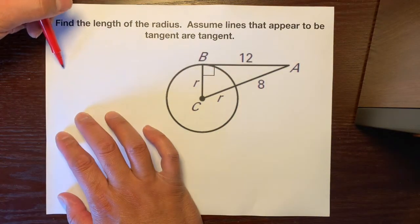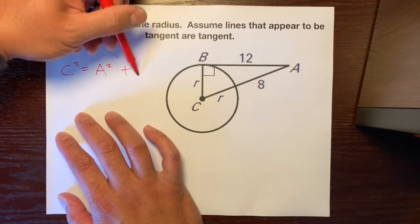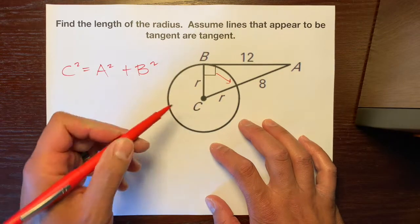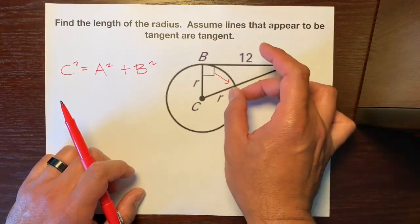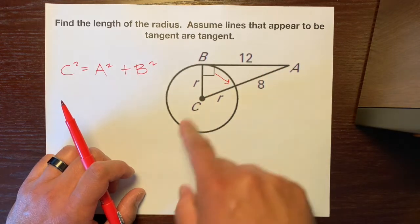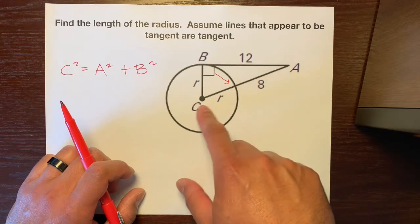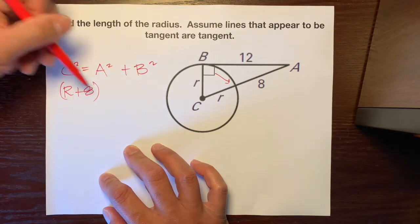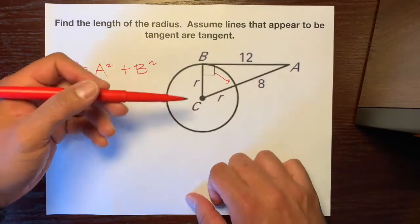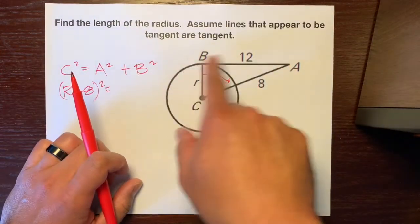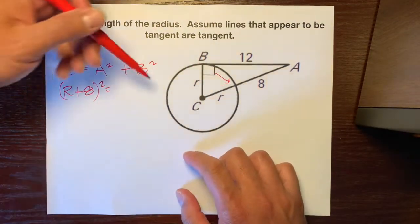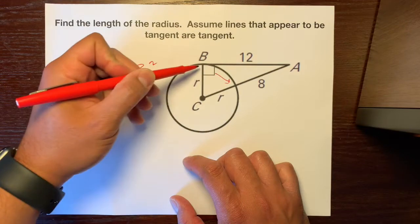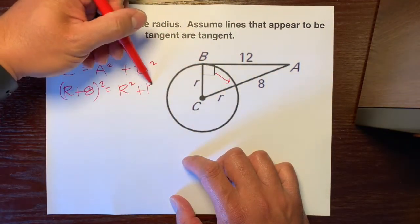If you forgot the Pythagorean theorem, it's c squared equals a squared plus b squared, and c is the hypotenuse. The right angle is opposite the hypotenuse. The length of this hypotenuse is r plus 8, not r times 8 — it's adding. So we write r plus 8, squared. Our a is one of the two legs of this right triangle, which is r squared, plus b, which is this other leg, 12 squared.